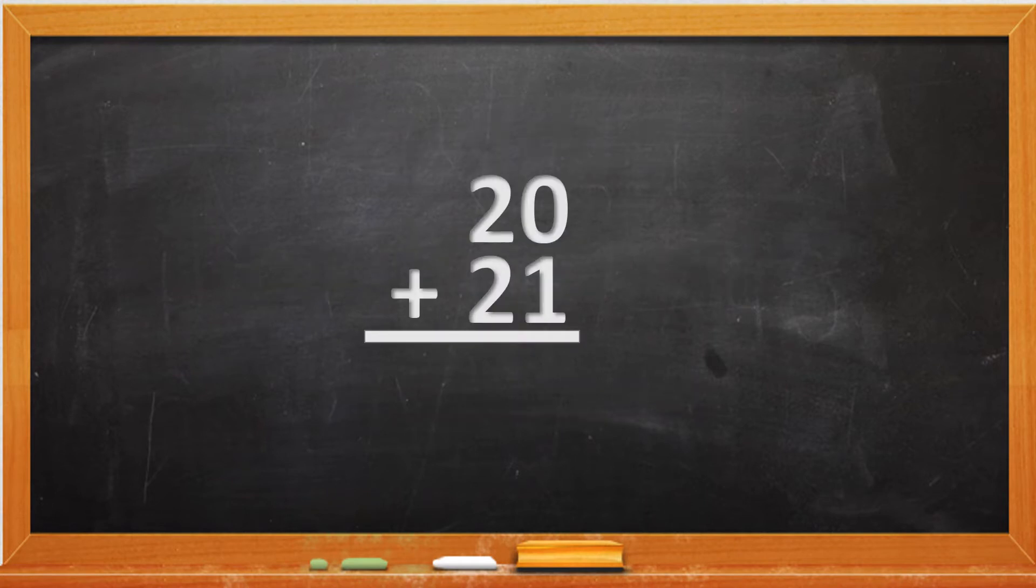Today in front of us we have a math problem: 20 plus 21. Whenever you do double digits, you always start with the right side, you never start with the left column. In front of us we have 0 plus 1. That's very easy, it's going to be 1. 1 is the sum.